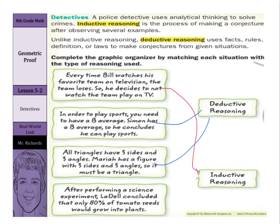After performing a science experiment, Liddell concluded that only 80% of tomato seeds would grow into plants. He observed something — he performed an experiment and came up with a conjecture — and that would be inductive reasoning.